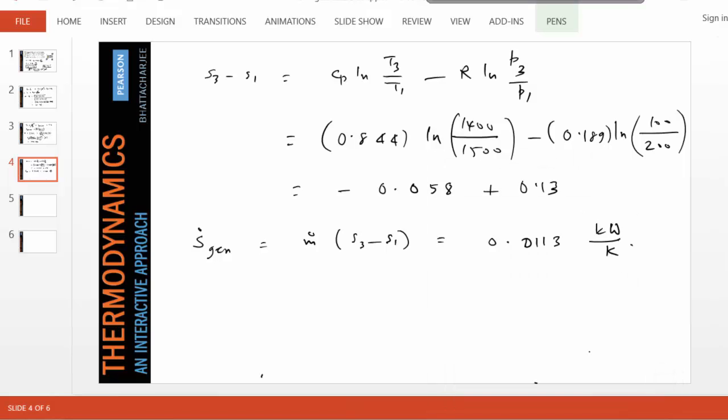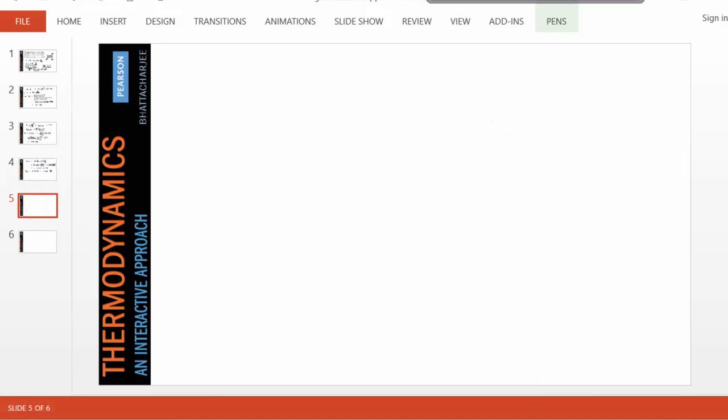Okay, now for the last part of the problem, we would like to know what would be the exit velocity if the nozzle were isentropic. So now we'll apply the energy equation between state 1 and state 2, the isentropic state. The flow energy remained constant. So therefore, H1 plus KE1 equals H2 plus KE2. Again, we'll neglect this. And we get back a result, V2 equals 2000 Cp times T1 minus T2.